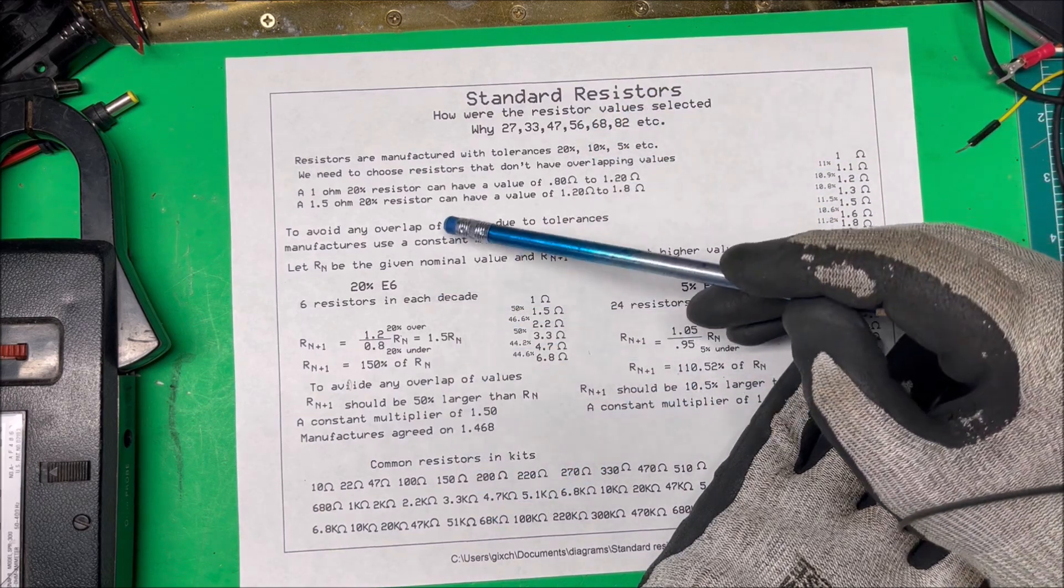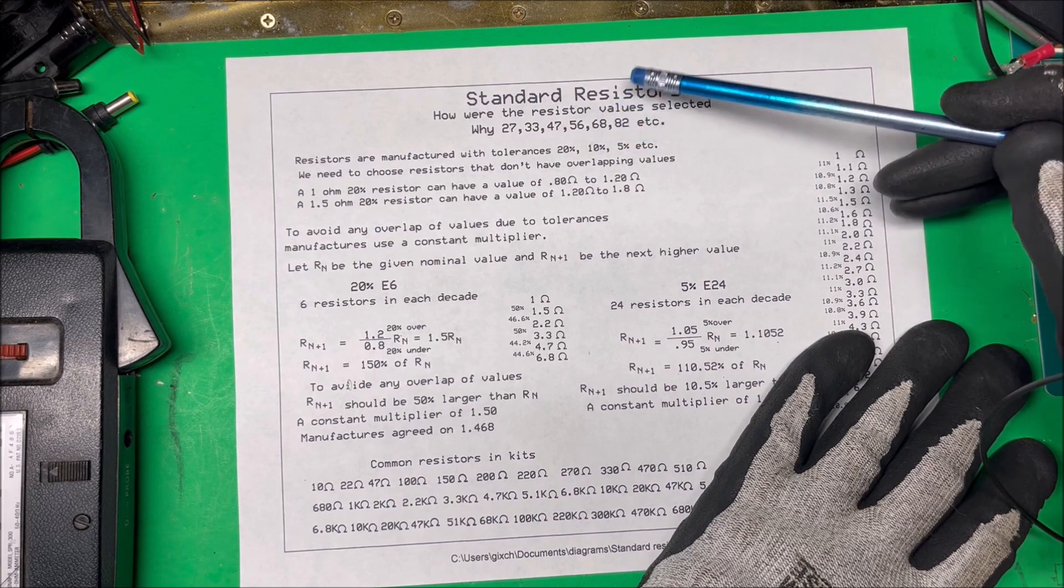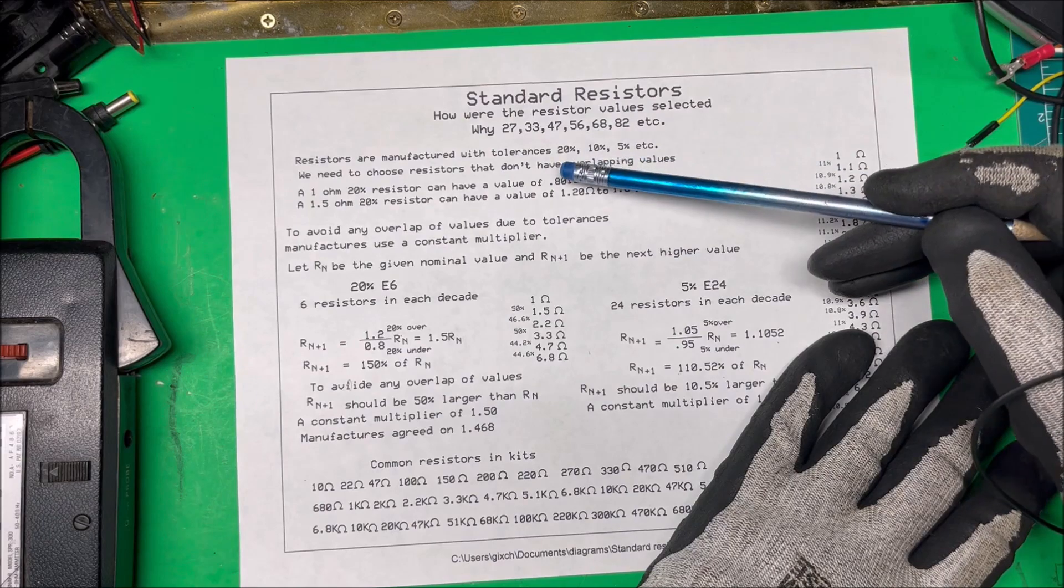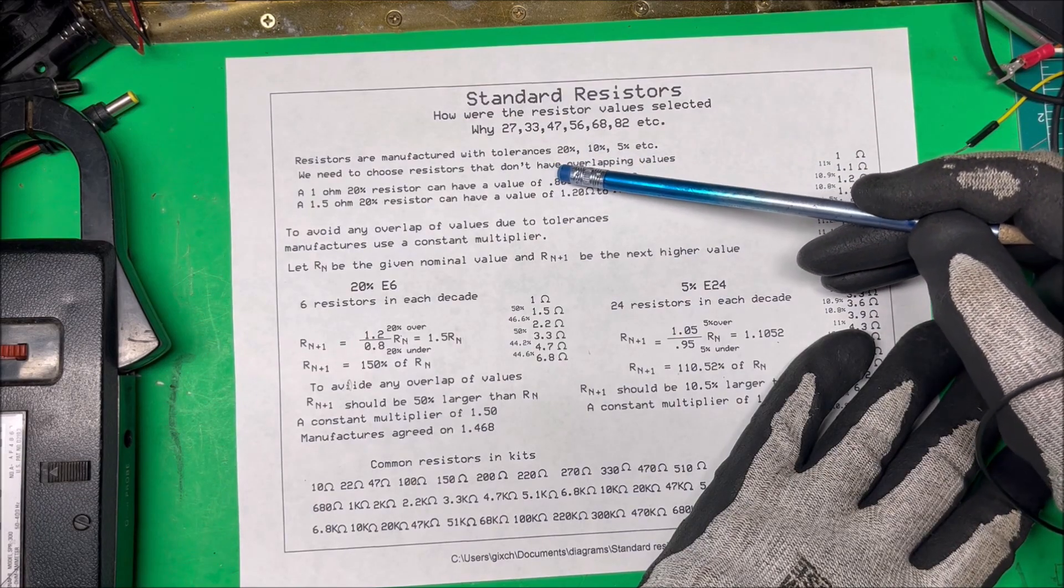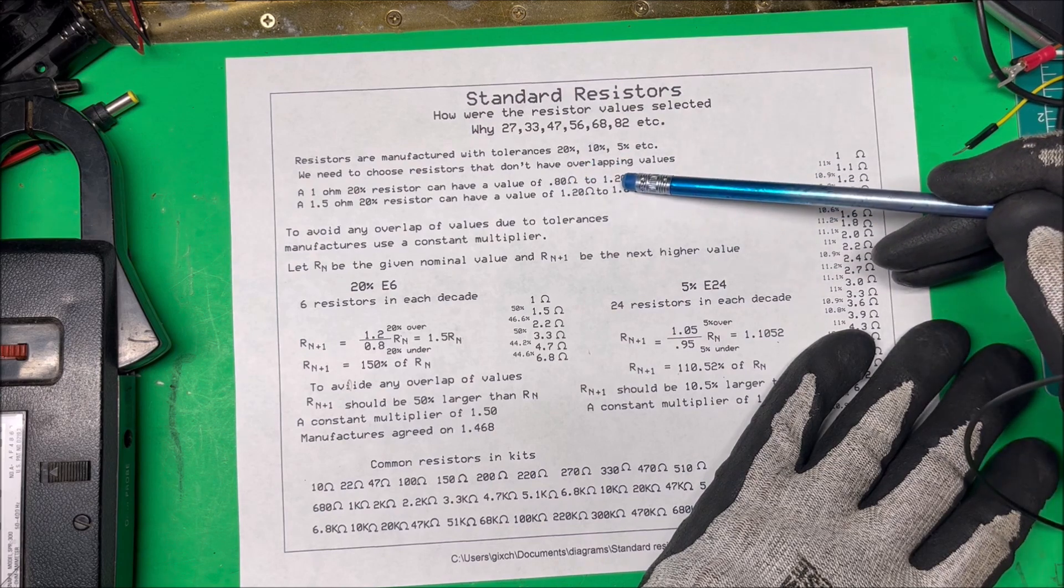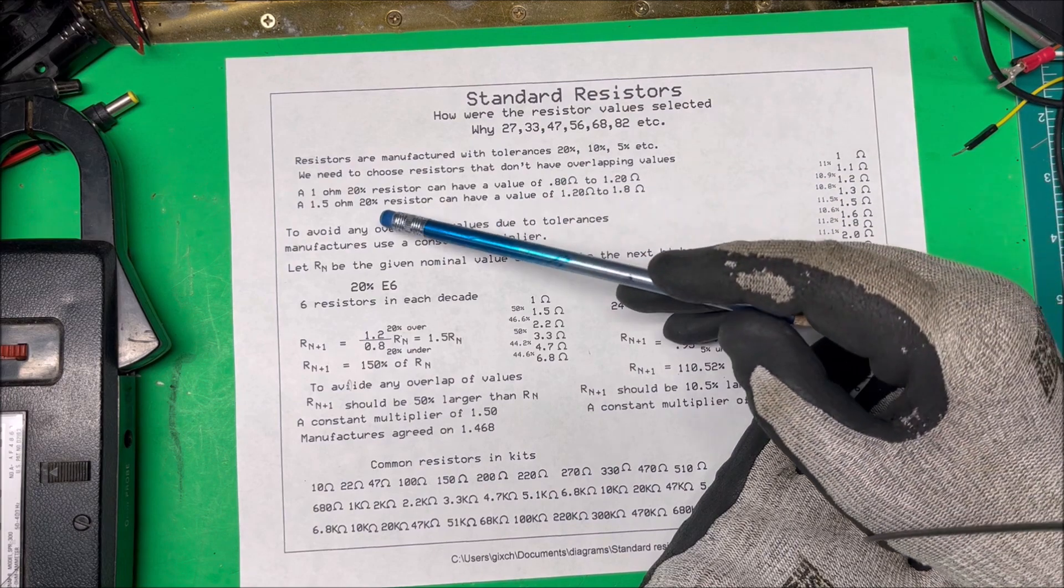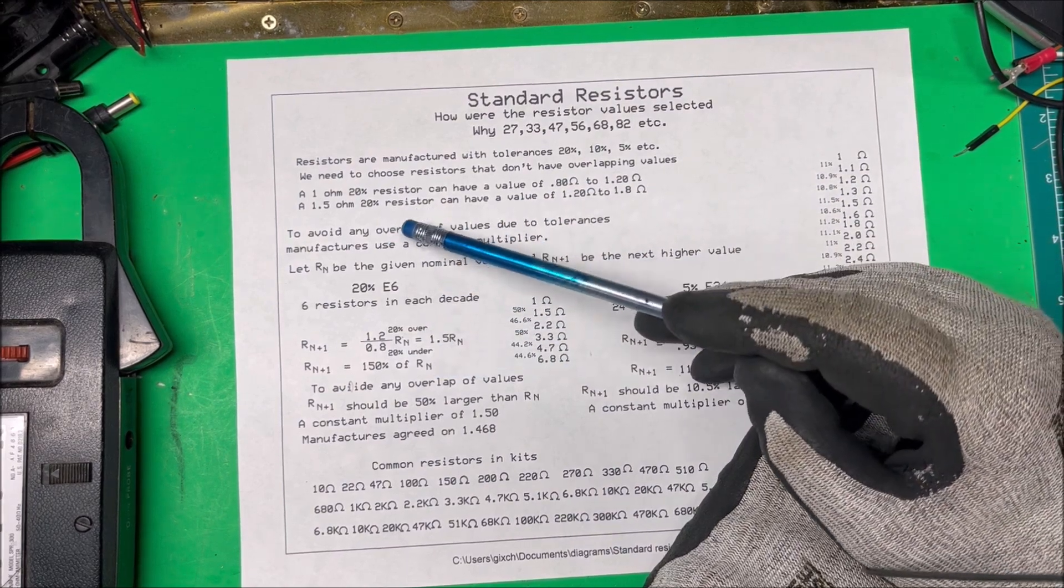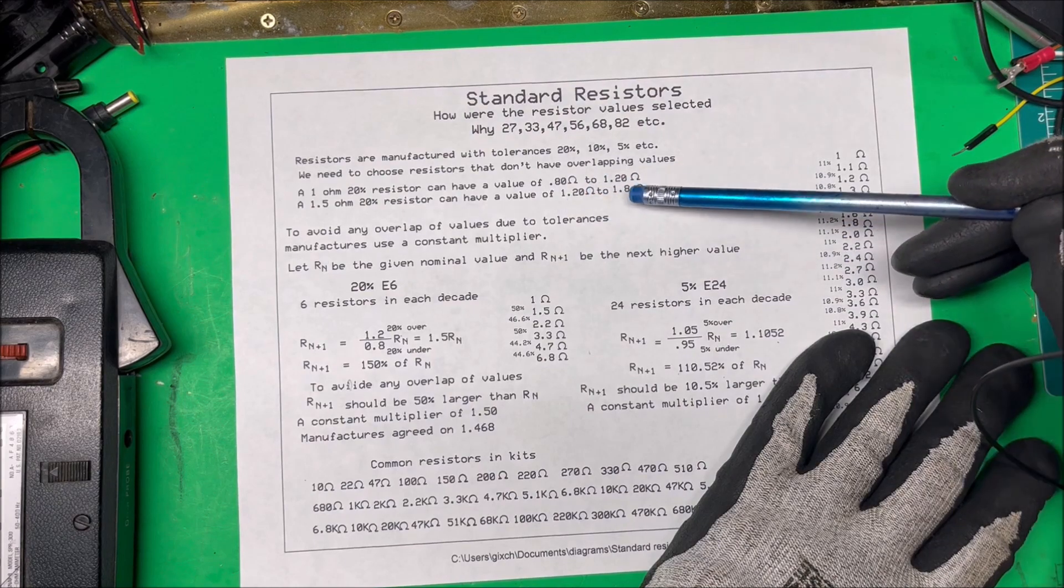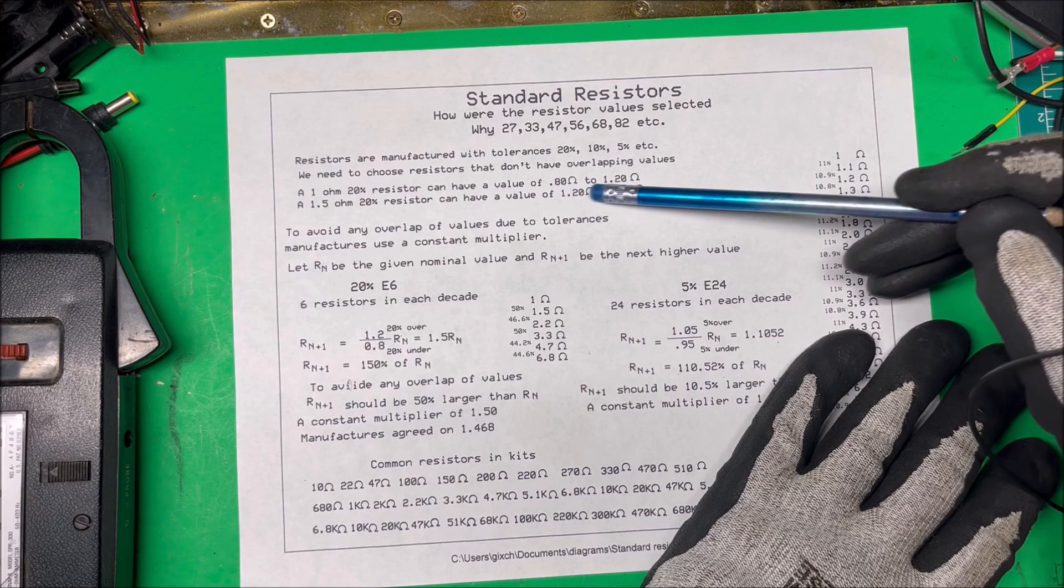We need to choose resistors that don't have overlapping values due to tolerances. If you had a one ohm resistor at twenty percent, it could be at 0.8 ohms or at 1.2 ohms and still be within tolerance. So the next higher value, they picked 1.5 ohms. At 1.5 ohms you could have 1.2 ohms or 1.8 ohm resistor and would still be within its tolerance, so we don't want those to overlap.